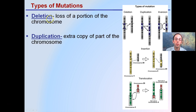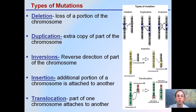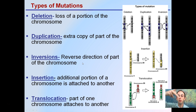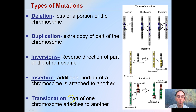Type 2 mutations: a deletion is simply the loss of a portion of a chromosome. A duplication is an extra copy of part of the chromosome — two copies instead of just one. An inversion is a reverse direction, taking a DNA sequence and reversing or flipping it over, which is going to cause some negative effects. An insertion is when an additional portion of a chromosome is attached to another — inserting something where it shouldn't belong.